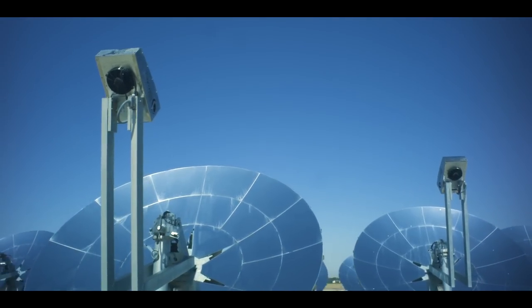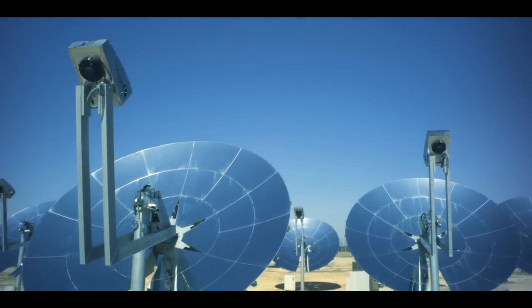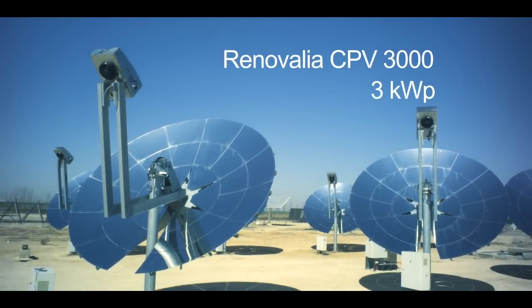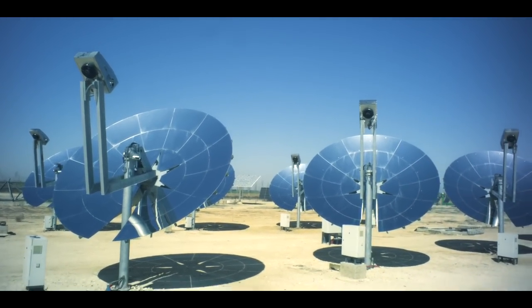The Renovalia photovoltaic concentration system, CPV 3000, designed to generate 3 kilowatts of peak power, is based around the following components.